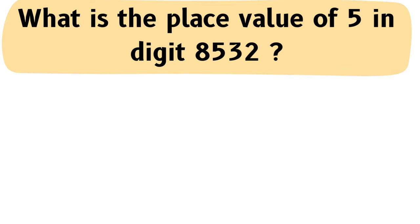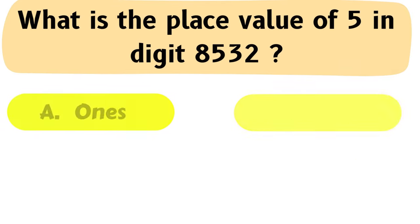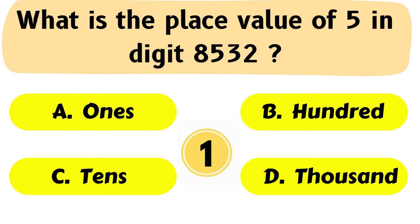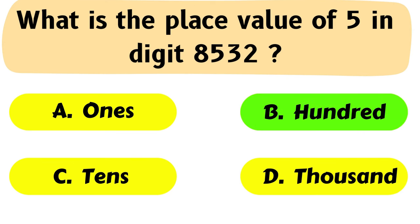Question No. 19: What is the place value of 5 in the digit 8532? The correct answer is Option B: 100.